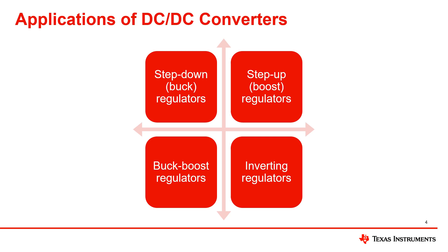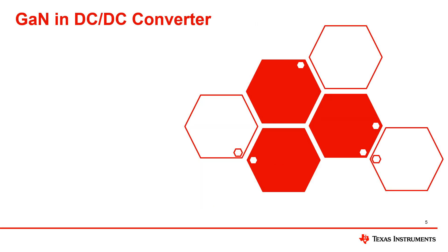Switching mode power supply designers are always pursuing higher power density, which requires higher frequency and efficiency, and this is where GAN comes into play. Compared to silicon FETs, GAN high electron mobility transistors or HEMTs exhibit smaller gate charge, faster switching, and no reverse recovery loss, making them more advantageous for switching mode power supply designers.